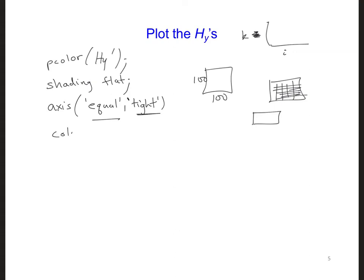Also type colorbar so we can see what numbers the colors in the plot represent. And finally, let's increase the font size a bit. We'll have set GCA font size. Now, since we've created a new code here, let's go ahead and plot the HY fields over every time step.